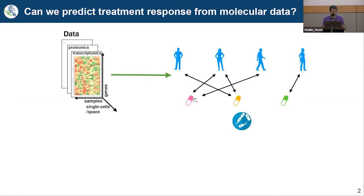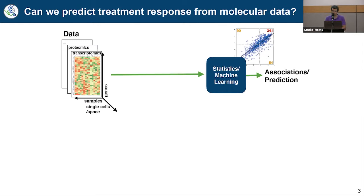Our ultimate goal is to use this data to understand what's going on in disease and find the right therapies to treat patients. We need computational methods — in particular statistics and machine learning — to find patterns in the data that help us understand a disease or build more predictive models, for example to estimate whether a therapy is going to work on a patient or not.